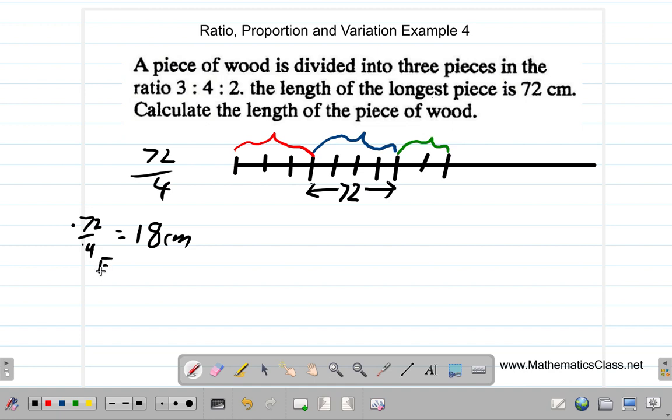So each part is 18 centimeters long. Now, you want the length of the entire piece of wood. How many parts do you have? 1, 2, 3, 4, 5, 6, 7, 8, 9. In other words, you could say the number of parts is going to be 3 plus 4 plus 2, which is 9.